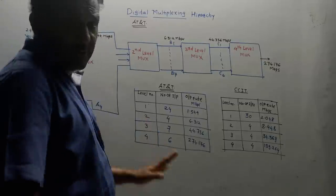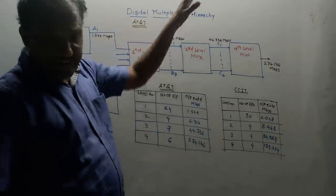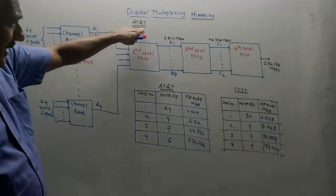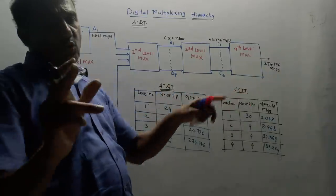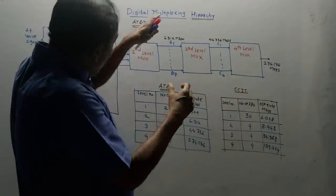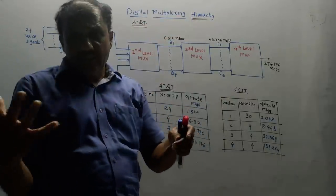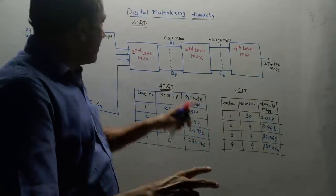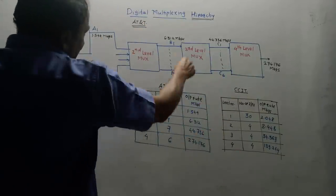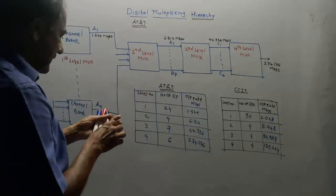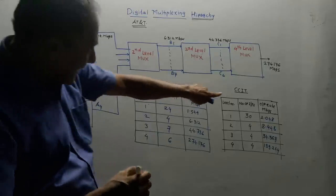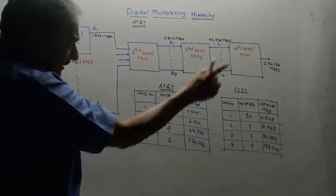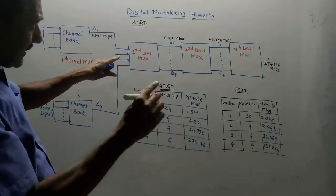The next very important part is the digital multiplexing hierarchy. Worldwide, there are two important digital multiplexing hierarchies: AT&T and CCIT. Multiplexing hierarchy means that different levels of multiplexing are used. The AT&T hierarchy is used in North America, whereas CCIT is used in European countries — these are standard techniques.